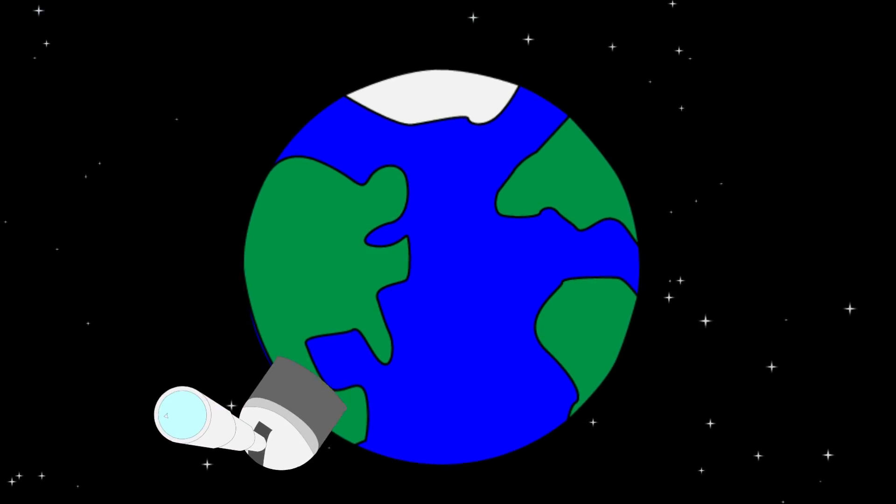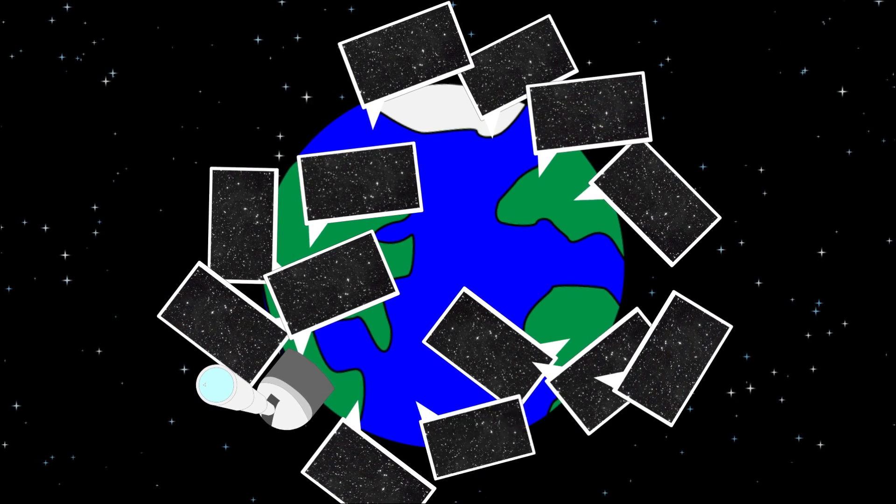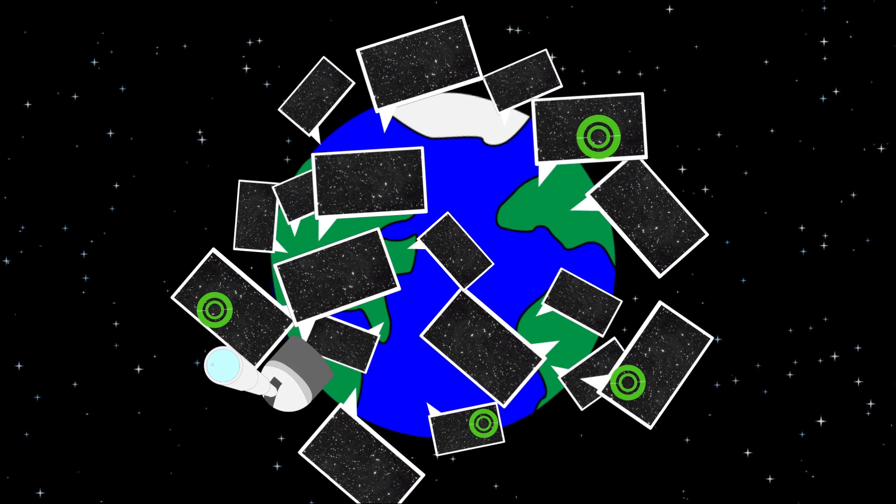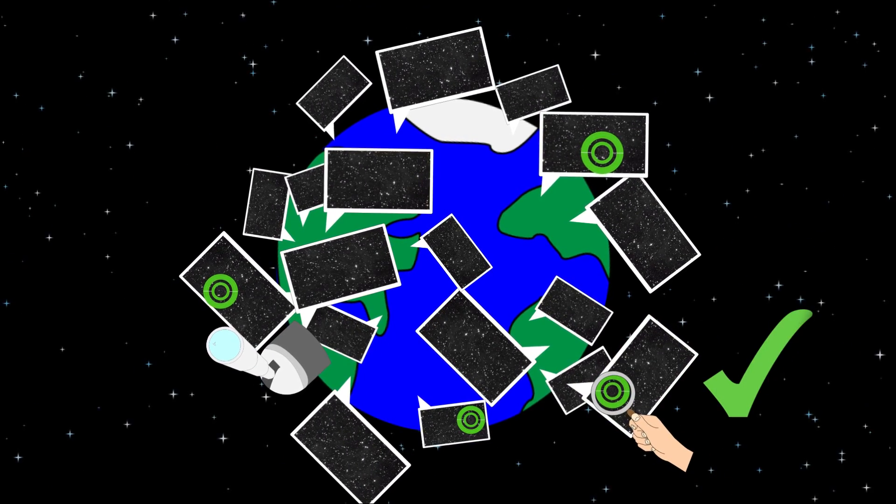Scientists used to do this comparison by hand, but there is now so much data that they need to use computer algorithms to sift through the data to try to make these initial detections. If they spot something, a scientist will then review the results to make sure it's accurate.